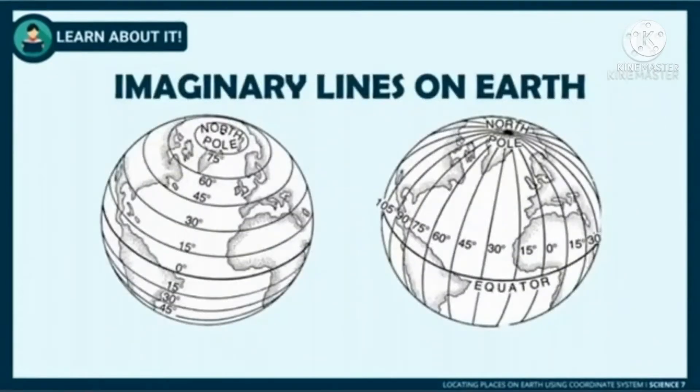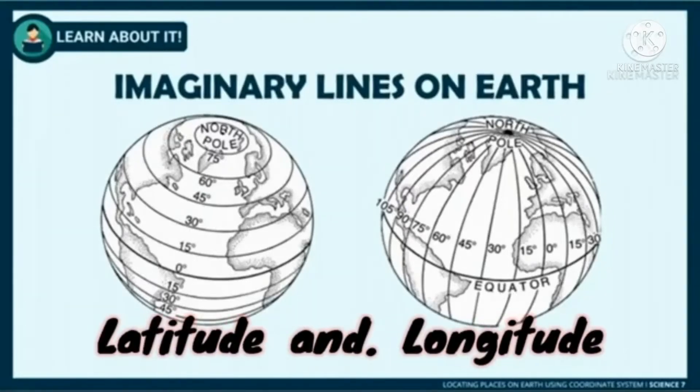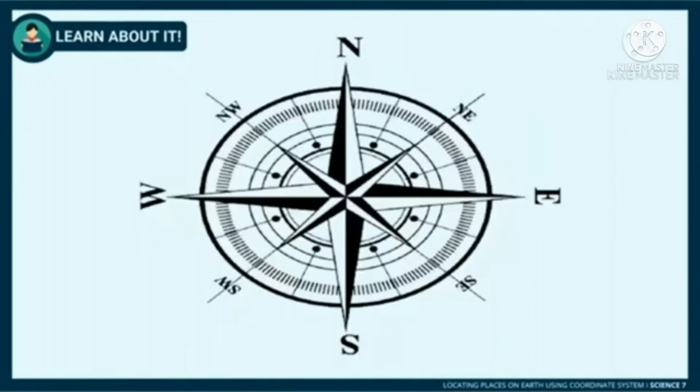There are two imaginary lines on Earth that are used to identify coordinates of a place using a map: the latitude and longitude. It is very necessary to be familiar with the directions to correctly get the coordinates of a given place.